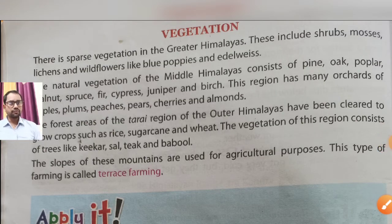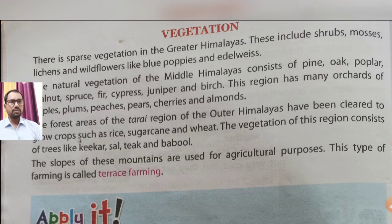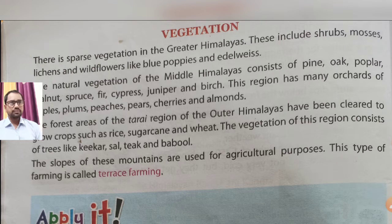In this session, we will first discuss vegetation. We will look at what kind of vegetation is found in the Northern Mountains. There is sparse vegetation in the Greater Himalayas. This includes shrubs, mosses, and wild flowers like blue poppies and edelweiss.